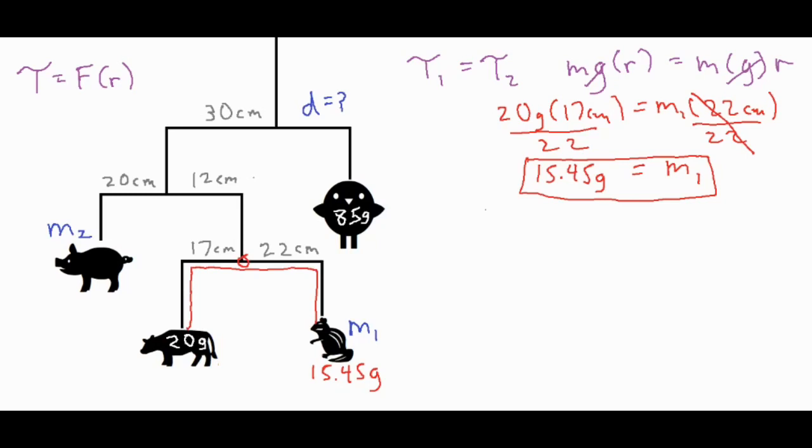All right, so it was a pretty simple calculation. We just had to find the product of 20 and 17, divide both sides by 22, and then we got an unknown mass of 15.45 grams for our little chipmunk over here.